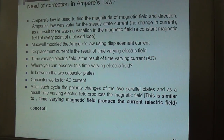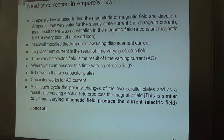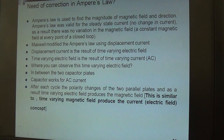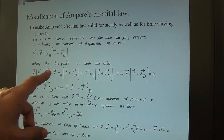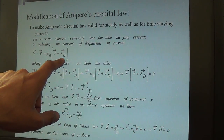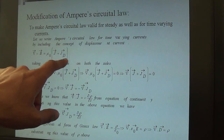The concept of displacement current is that it arises from a time-varying electric field. We know that a time-varying magnetic field produces current; similarly, a time-varying electric field produces a magnetic field. This is the core concept of displacement current. Since we use Ampere's law to calculate the magnetic field, we introduce a new current called the displacement current, denoted by J_D.